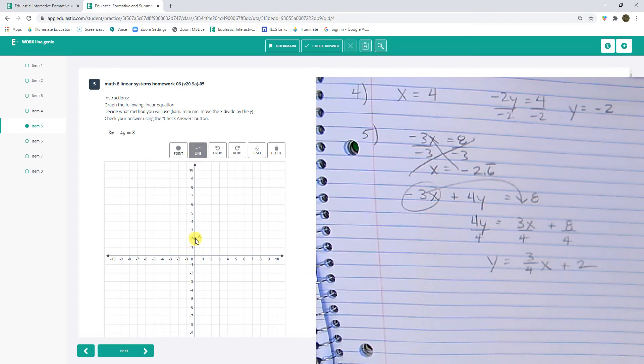How about graphing a line in slope-intercept form? Let's start at 2. And how about this? Let's go up 3 over 4. 1, 2, 3. 1, 2, 3, 4. There we go.